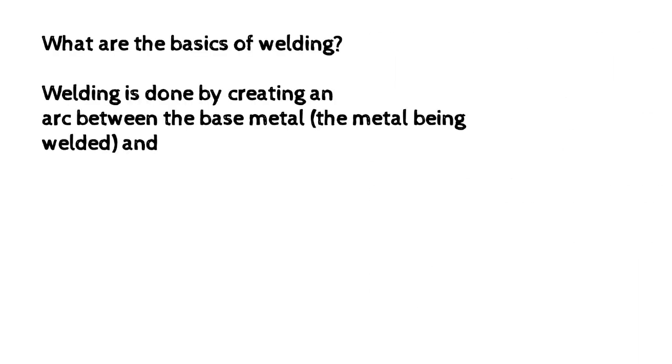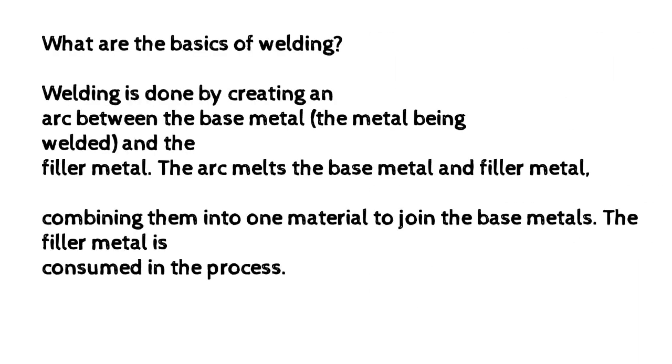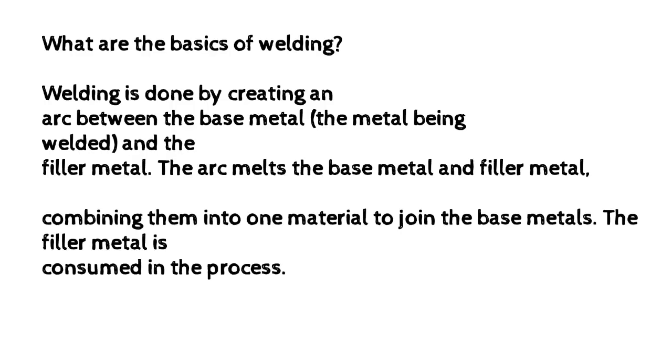What are the basics of welding? Welding is done by creating an arc between the base metal — the metal being welded — and the filler metal. The arc melts the base metal and filler metal, combining them into one material to join the base metals. The filler metal is consumed in the process.